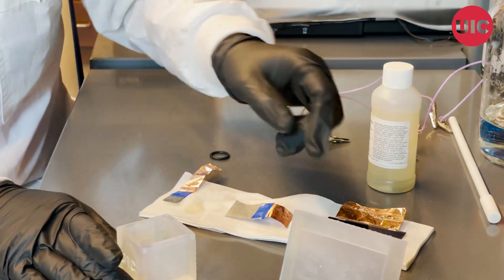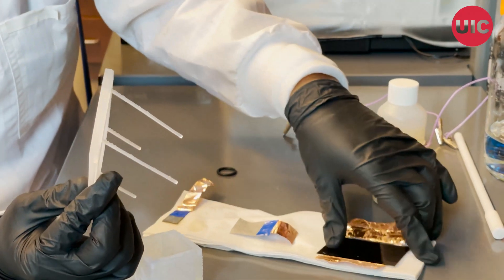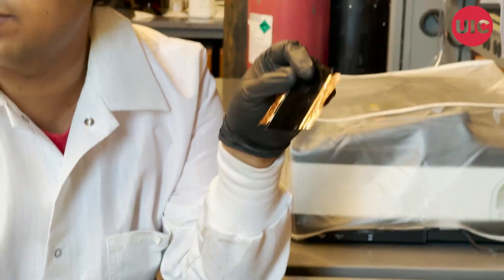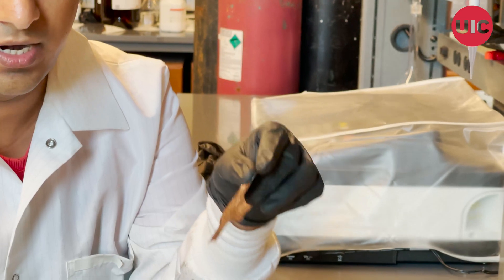First, we'll use this solar panel case and put this triple junction 32% efficient light absorber into it.